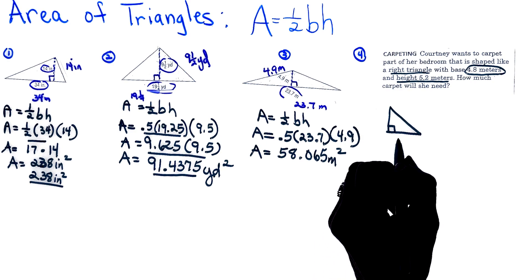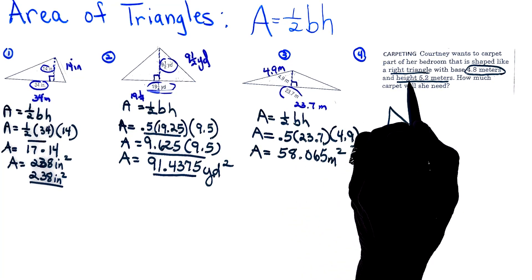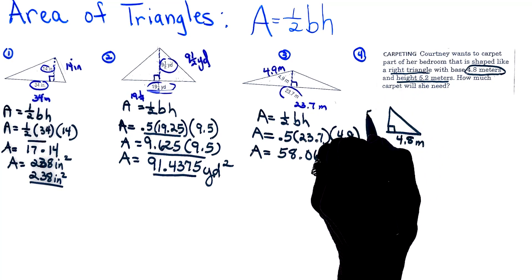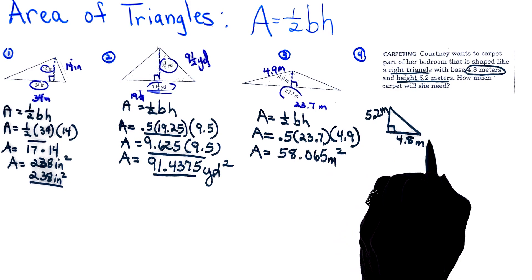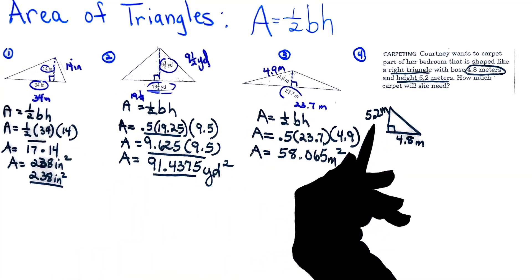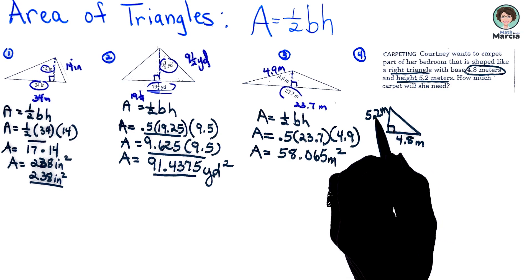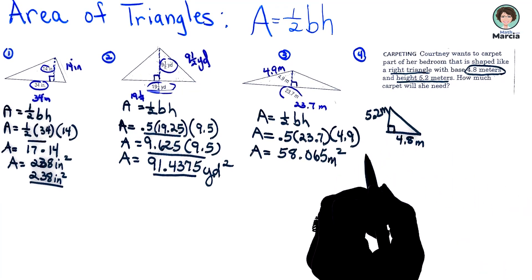The base was 4.8 meters, the height is 5.2 meters. Remember it doesn't matter that it doesn't look the same as the others, but here is the clincher: my right triangle side meets the base at 90 degrees, so I know that's where I needed to put my height.